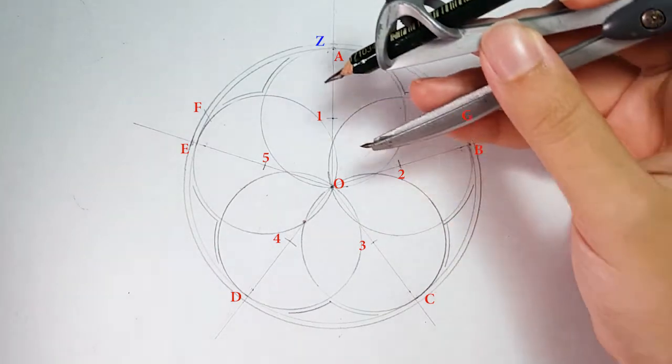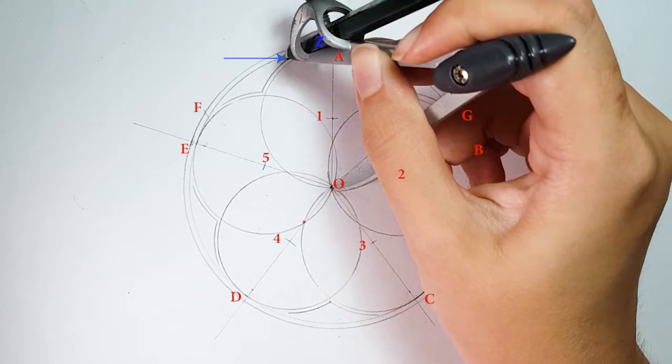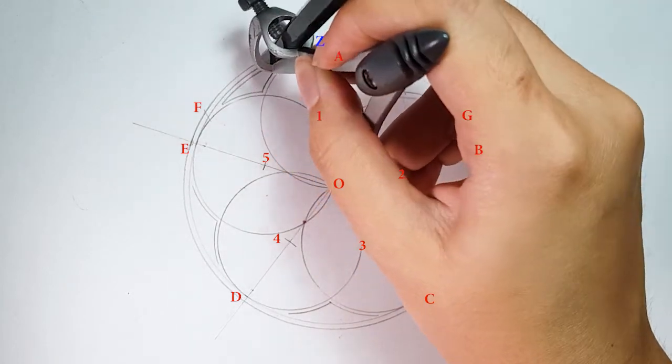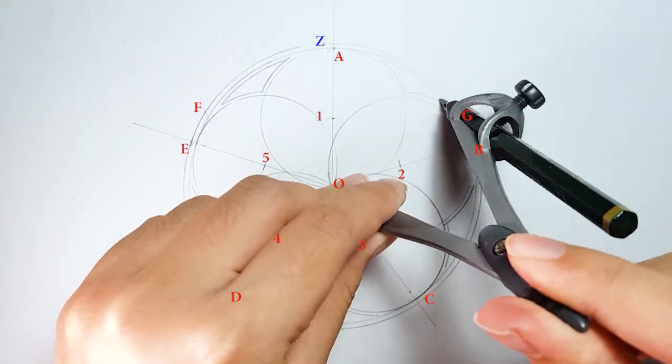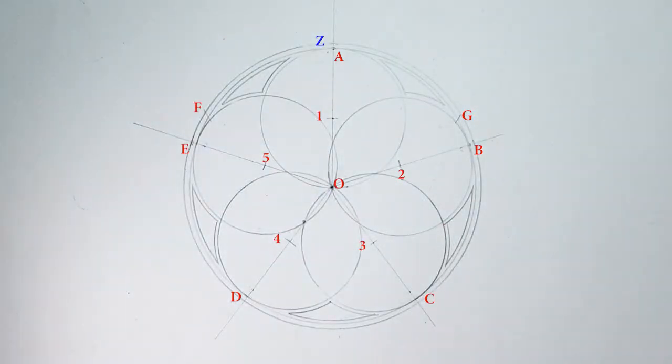On the same point, adjust your compass to the arc line where the lines end and complete the joint line. The basic guideline of cinquefoil is finished.